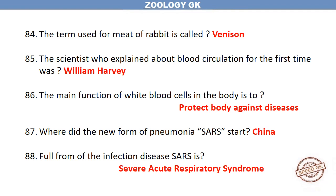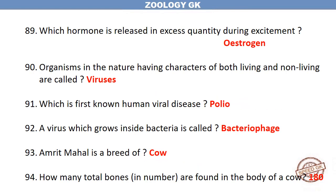The main function of white blood cells in the body is to protect the body against diseases. Where did the new form of pneumonia SARS start? China.